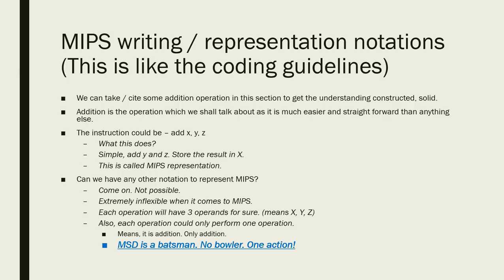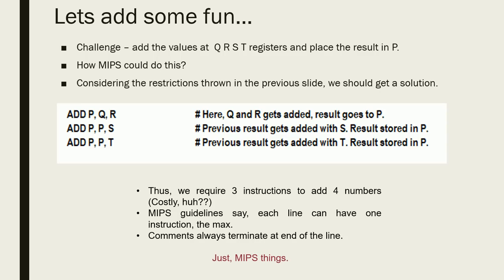Each instruction can do only one operation — it cannot be an all-rounder. If I add, it is just going to add and nothing else, just like a specialist. Each instruction does one dedicated piece of work. Now, to illustrate how to write it, let's assume Q, R, S, T are registers.